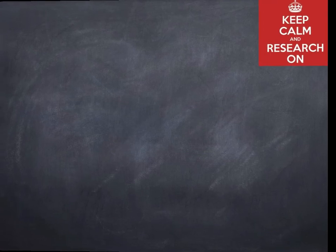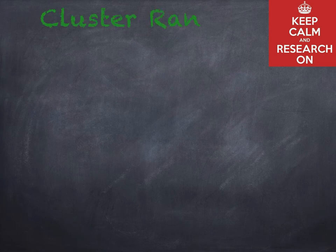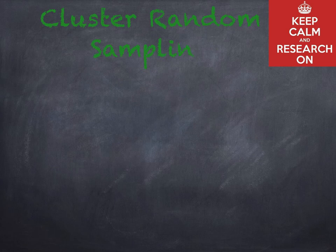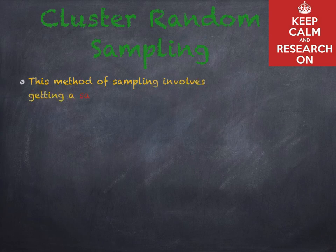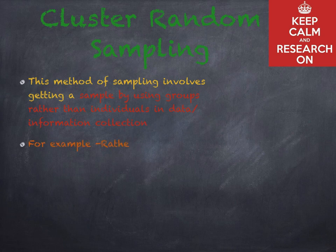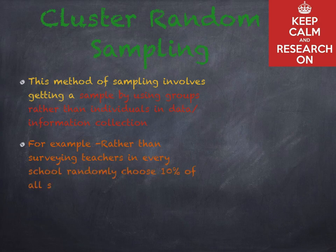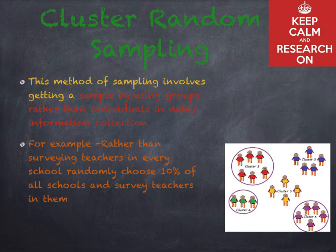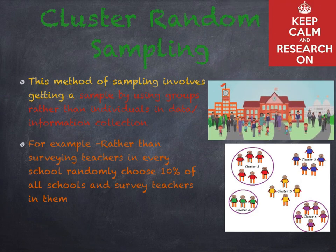Cluster random sampling involves getting a sample by using groups rather than individuals in data or information collection. For example, rather than surveying teachers in every school, you would randomly choose 10% of all schools and survey teachers in those schools.